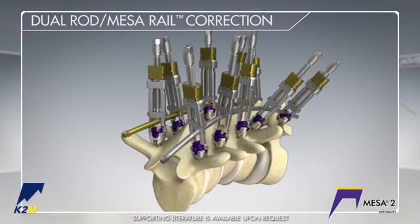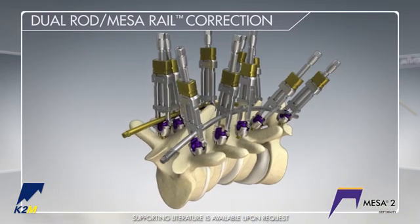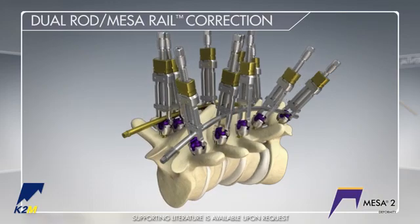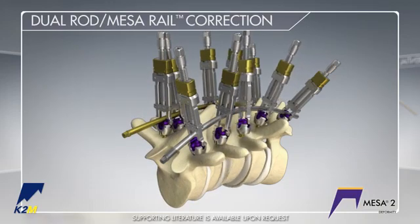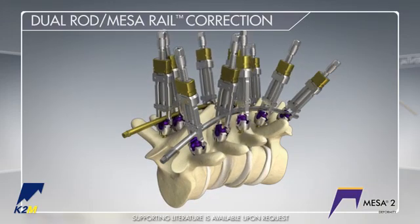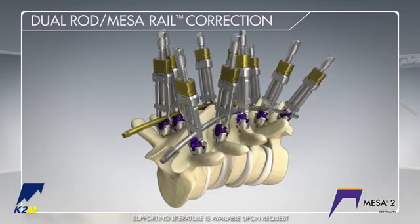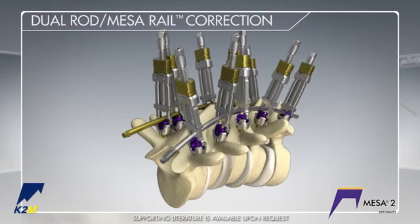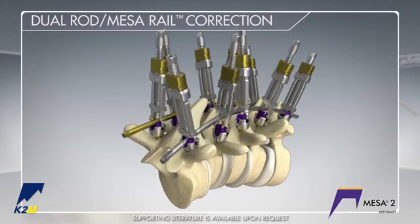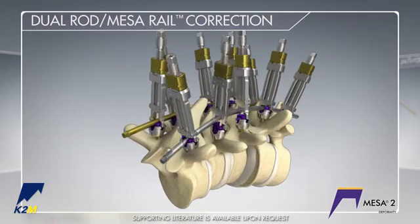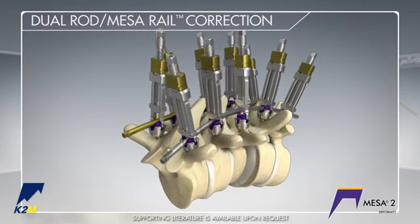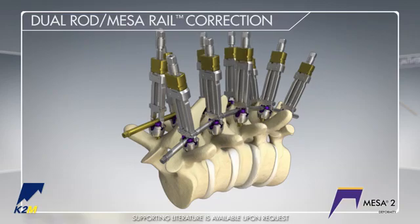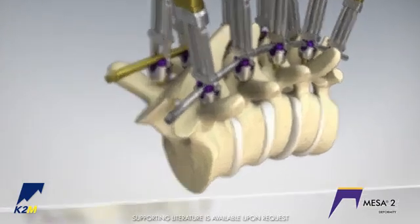Last, this technique requires the simultaneous placement of both the convex and concave rods or rails. Placing both rods at the same time and using the MESA screws with the MESA II crickets allows the correction forces to be shared over multiple levels.